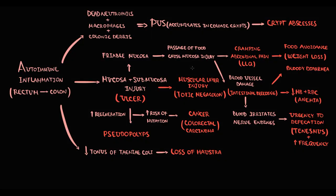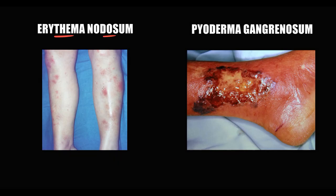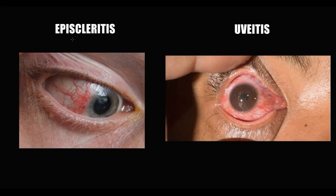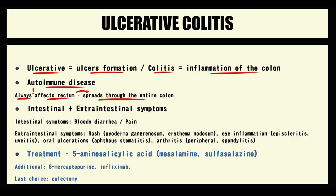Because ulcerative colitis is an autoimmune disorder causing severe inflammation, it has not only intestinal manifestations but also systemic, or extra-intestinal, manifestations. These include skin rash — specifically erythema nodosum and pyoderma gangrenosum — eye inflammation manifesting as episcleritis and uveitis (red eye), oral ulcerations called aphthous stomatitis, and arthritis. Intestinal manifestations are severe bloody diarrhea and abdominal pain; extra-intestinal manifestations include rash, eye inflammation, oral ulcerations, and arthritis.